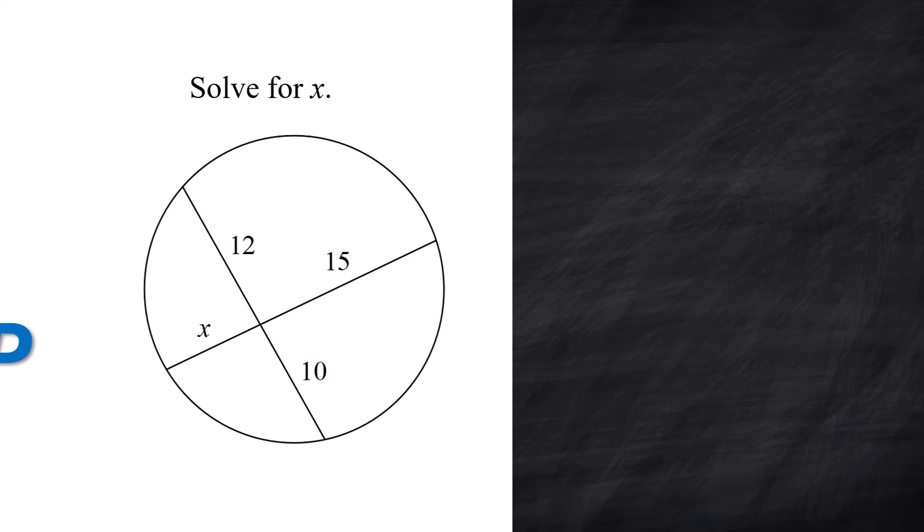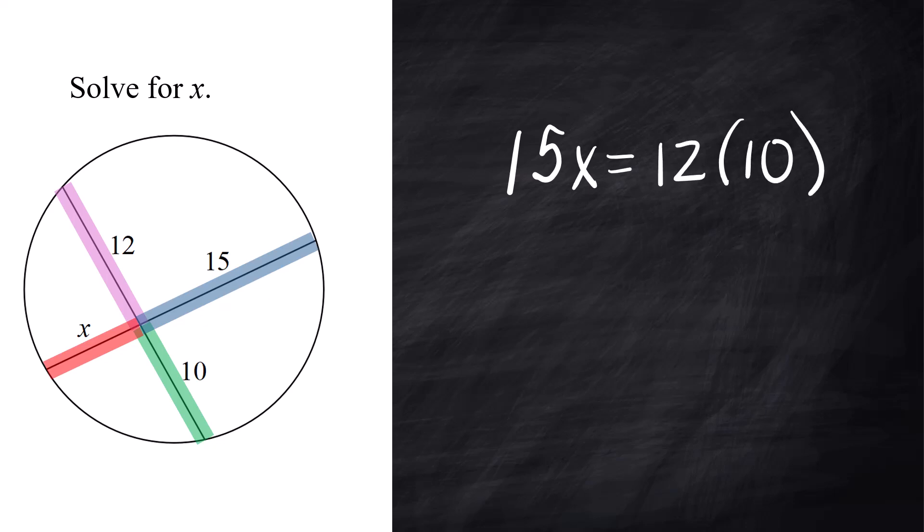Let's do a problem. All right, we're solving for x. You have x here, and that's on the same chord as this 15. So we're going to end up multiplying those two together. And then we'll multiply the 12 and the 10. So we get x times 15 equals 12 times 10. And we get 15x equals 120. And when you divide both sides by 15, you're going to get x equals 8. Easy peasy. These PP problems are actually kind of fun if the numbers aren't complicated.